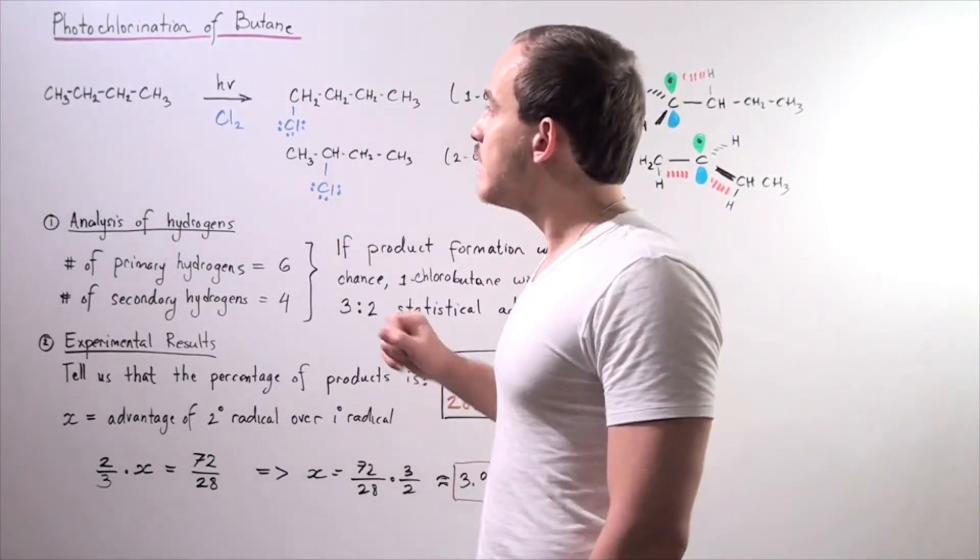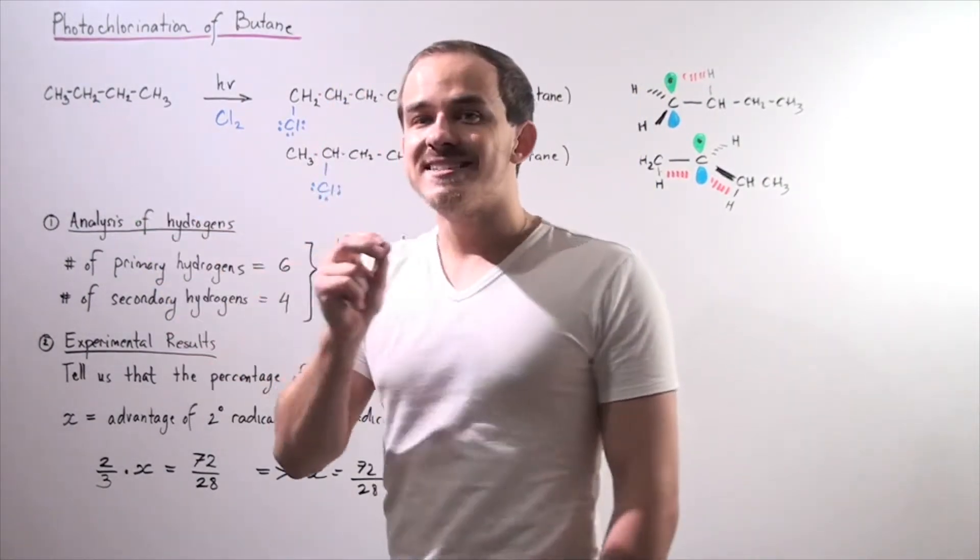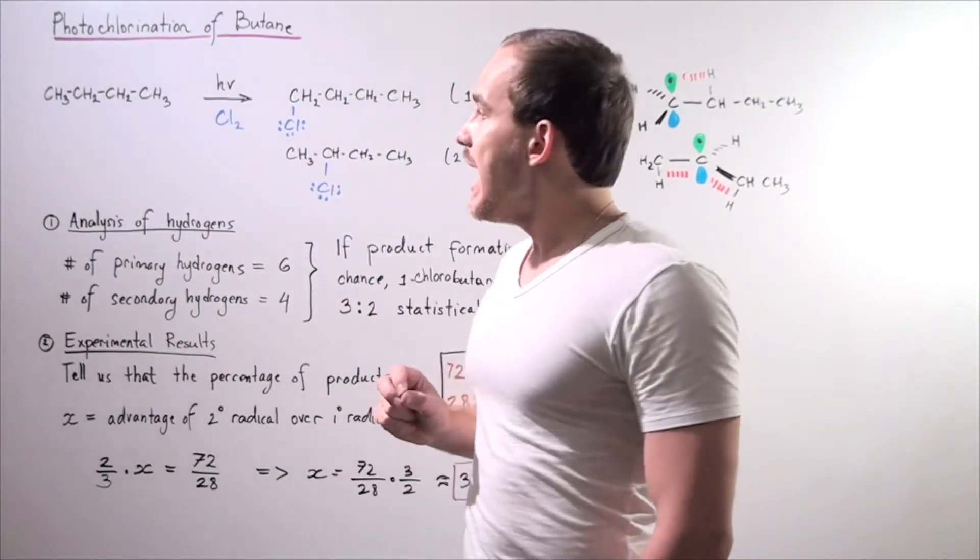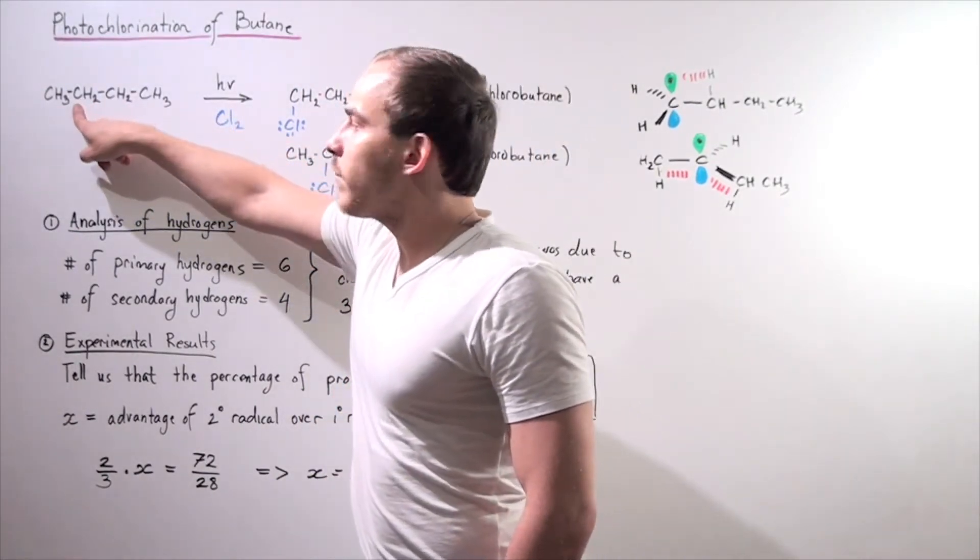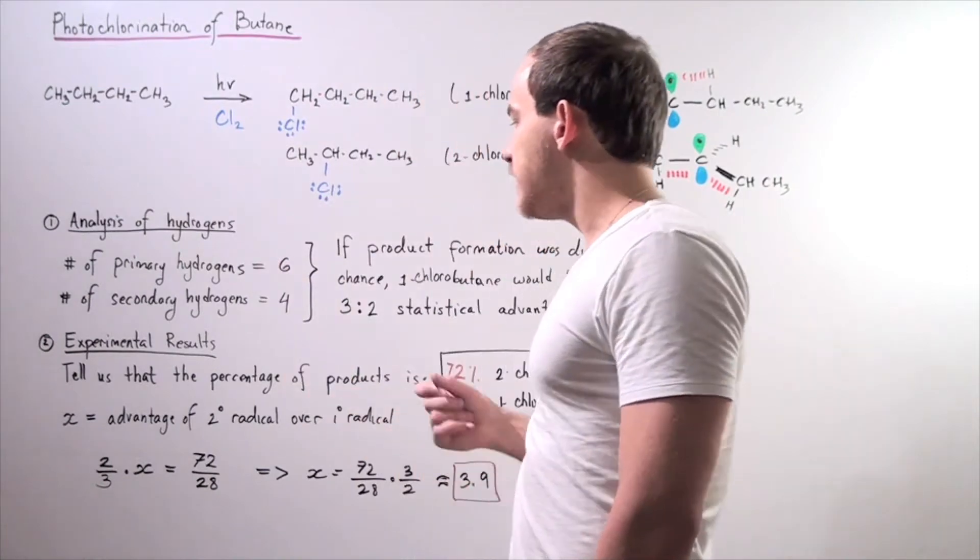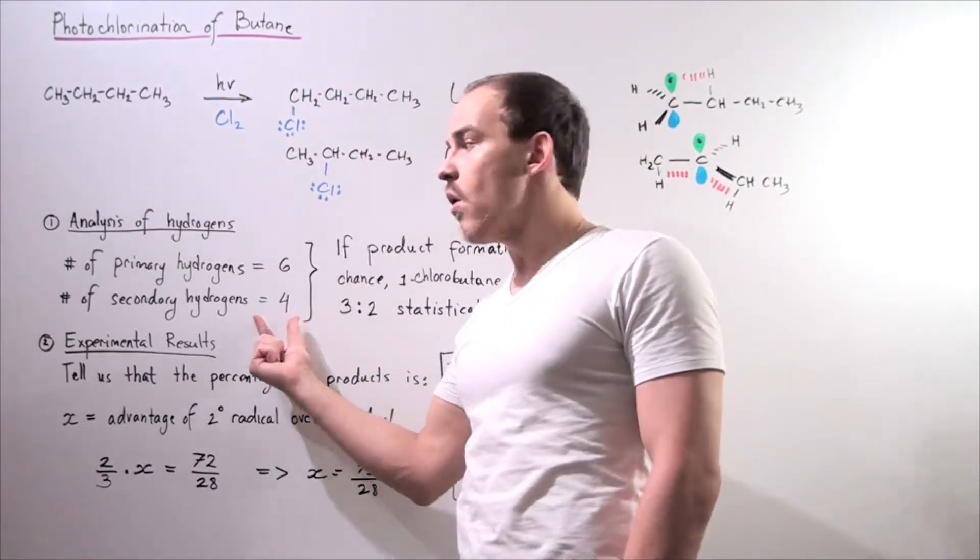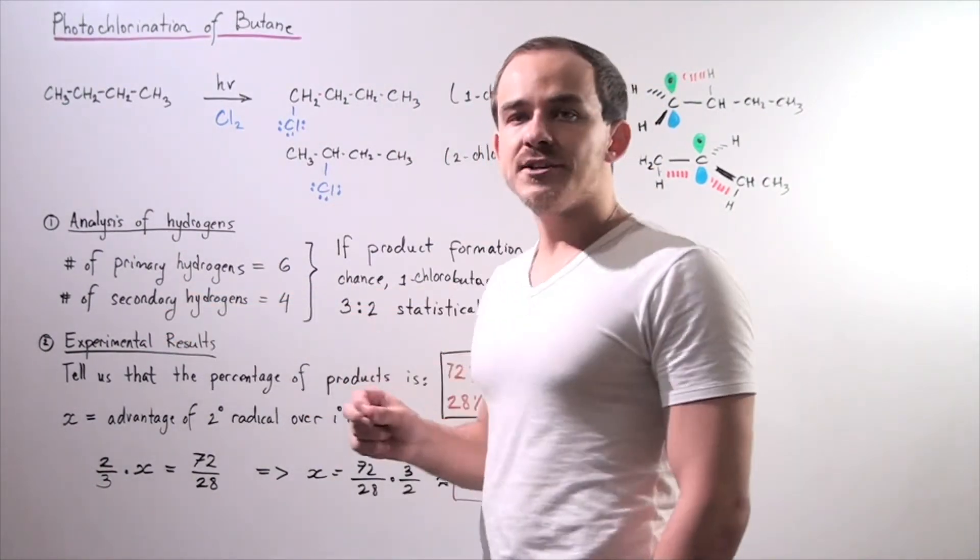At the same time, we have two secondary carbons and each secondary carbon has two H atoms. So that means we have two plus two, four secondary H atoms.